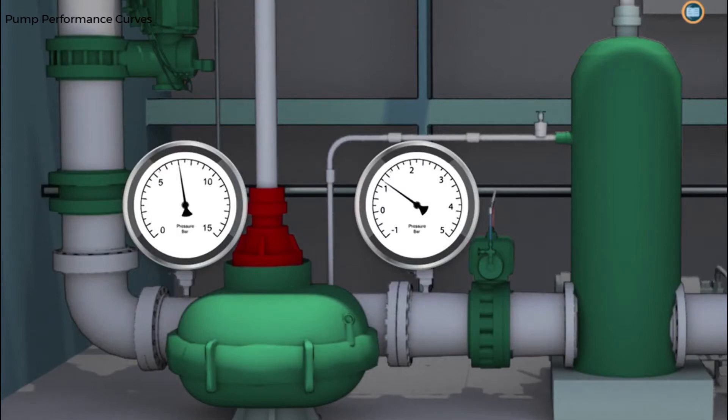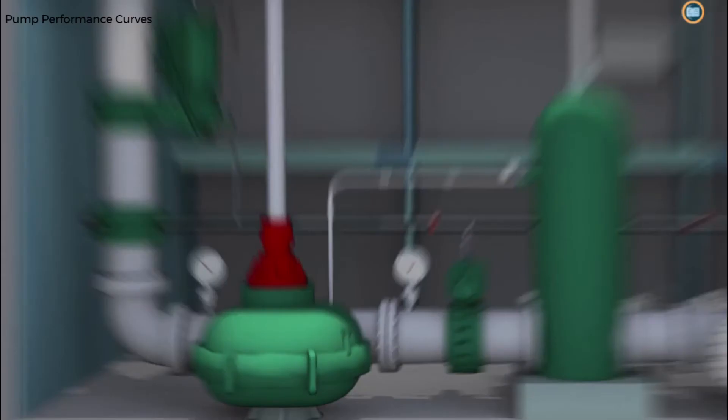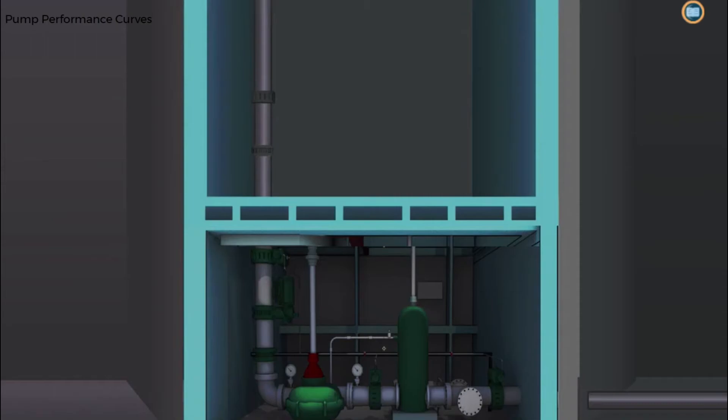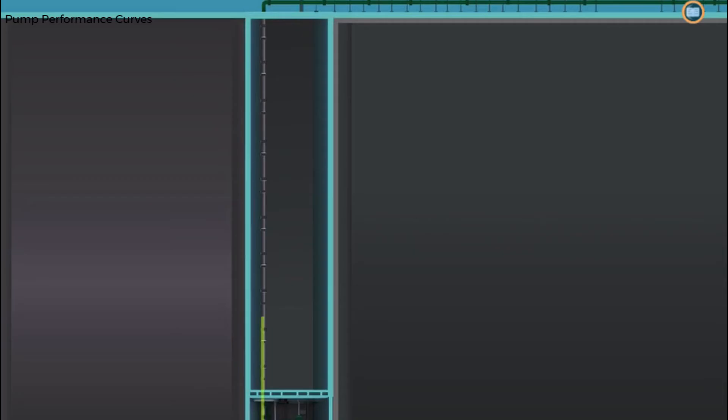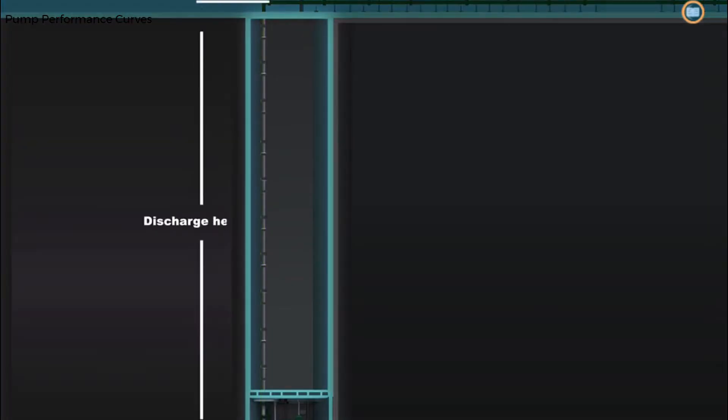If you are to control the flow of crude oil cargo correctly during bulk discharge, it's important that you understand the relationship between the flow and pressure generated by a centrifugal pump. When considering the pressure generated by a centrifugal pump, it's useful to think about how far up a column a pump can lift a liquid. Pumping system designers and manufacturers refer to this as head, or more accurately, discharge head.